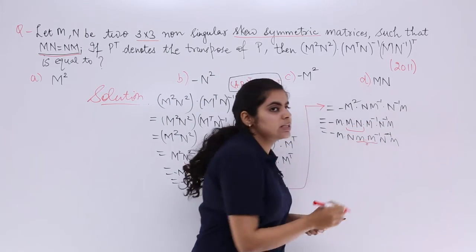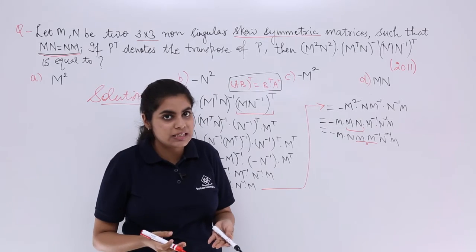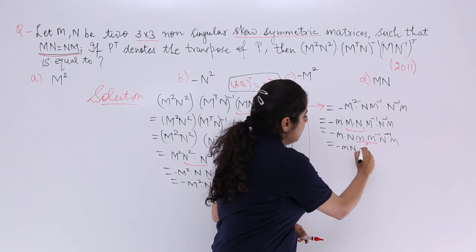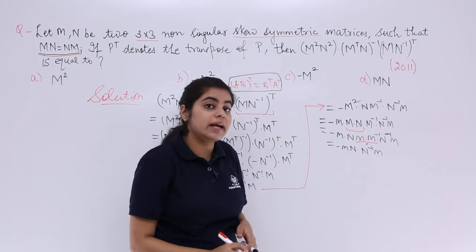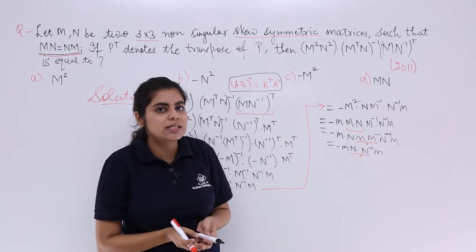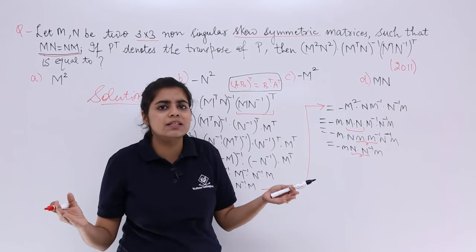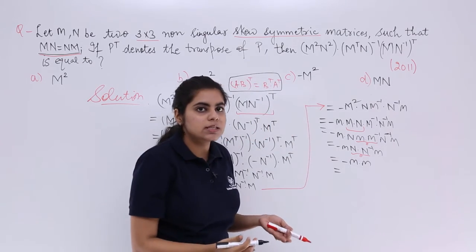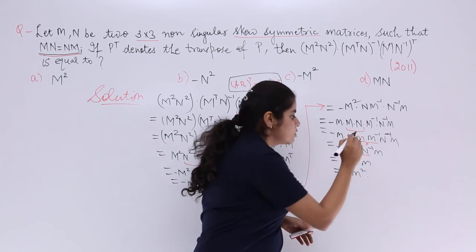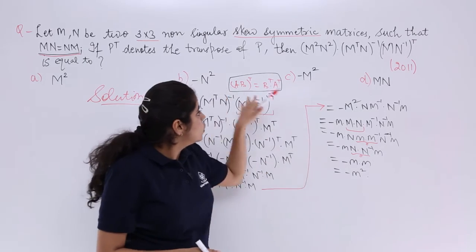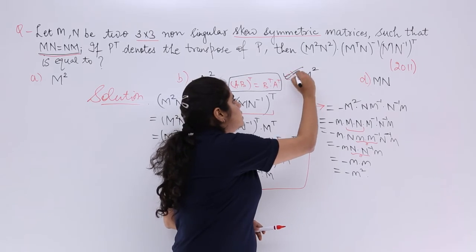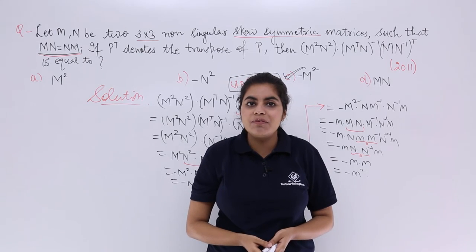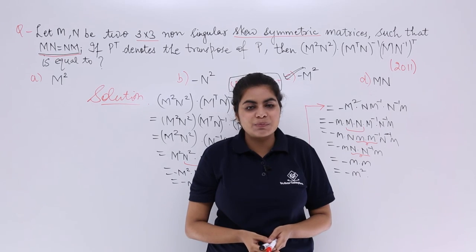Again N·N^{-1} gives identity, which vanishes. So we are left with minus M · M, which is minus M². The answer to this lengthy expression is minus M². Checking the options, option C is the correct answer: minus M². This solution was for the IIT-JEE question from 2011 using the concept of inverse and transpose of a matrix.